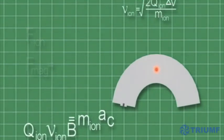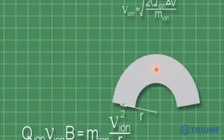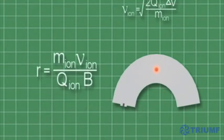Rearranging the formula, we obtain an expression for the radius of curvature as a function of the velocity and the mass of the ions.